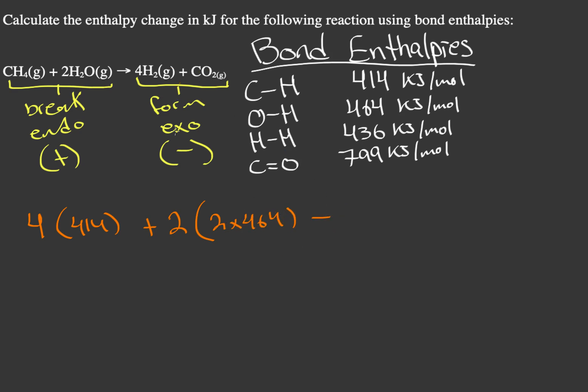And then minus, we're going to start looking at our bonds that are forming. We have four hydrogen gas molecules. Each hydrogen gas has 436 kJ per mole for this H-H bond, so we have four times 436.